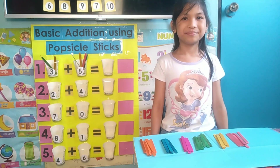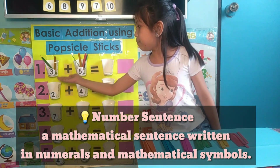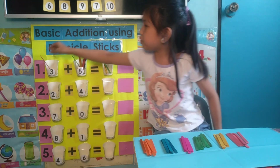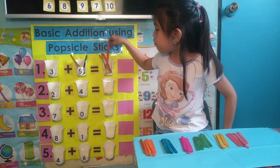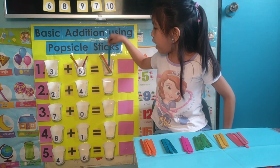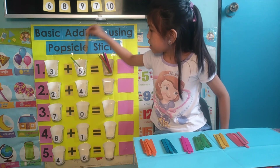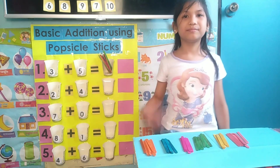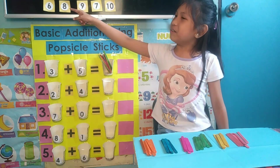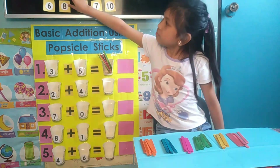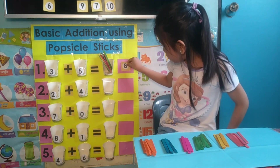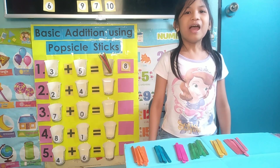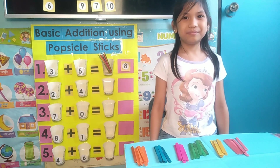Now, Laleh, what is our number sentence? Three plus five equals one, two, three, four, five, six, seven, eight! Very good! Can you tell us where is the number eight up there? Here! Okay, you paste it beside the popsicle sticks. So again, our number sentence is three plus five equals eight! Very good, Laleh! Good job! Yay!